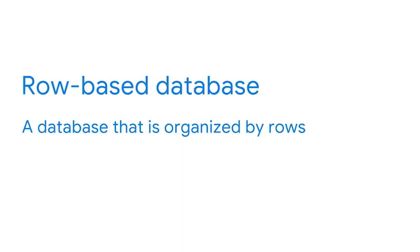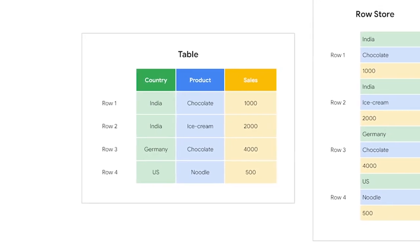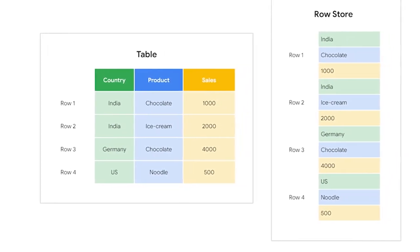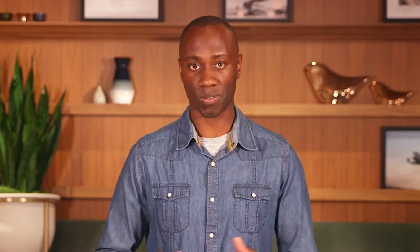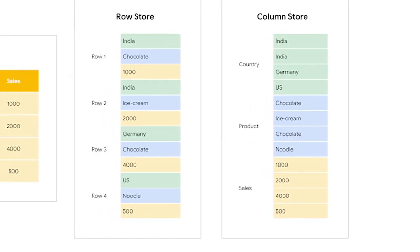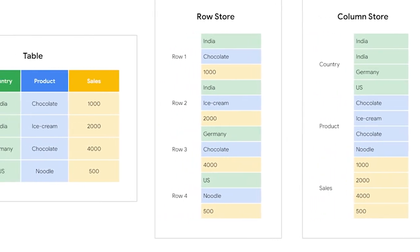Moving along to row-based and columnar databases. Row-based databases are organized by rows — each row in a table is an instance or entry in the database, and details about that instance are recorded and organized by column. This means that if you wanted the average profit of all sales over the last five years, you would have to pull each row from those years, even if you don't need all of the information. Columnar databases, on the other hand, are organized by columns. They are used in data warehouses because they are very useful for analytical queries, processing data quickly by only retrieving information from specific columns.